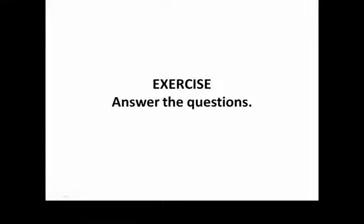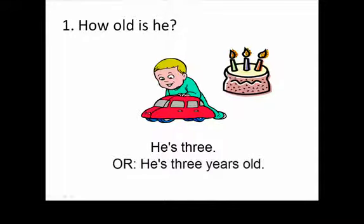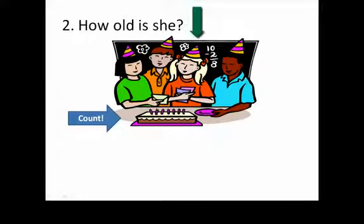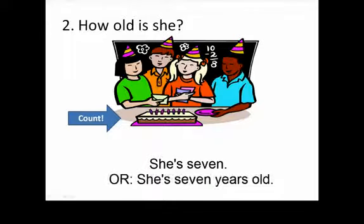Exercise. Answer the questions. One: How old is he? He's three. Or, he's three years old. Two: How old is she? She's seven. Or, she's seven years old.